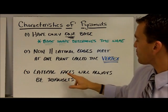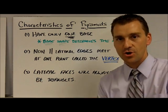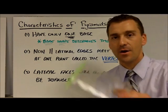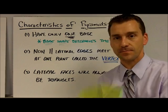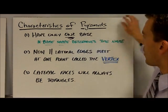Third thing, the lateral faces will always be triangles. You can see in this one, they're all triangles, compared to this guy, of which they were all rectangles. So there's a difference. Pyramids have triangles as faces. These guys always have rectangles as faces.